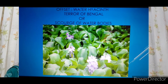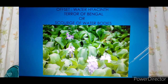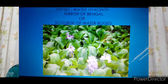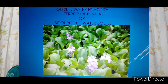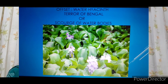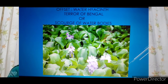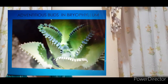Water hyacinth is an aquatic plant but it is known as the 'Terror of Bengal.' Water hyacinth is one of the most invasive weeds found in standing water of lakes and ponds. It drains the oxygen from water and hence causes the death of aquatic organisms, which is why it is called the Terror of Bengal.